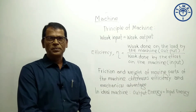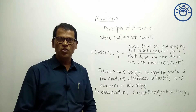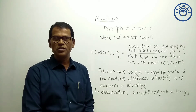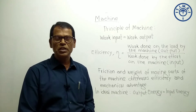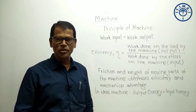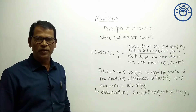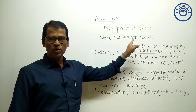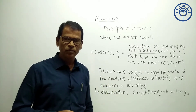Next is the principle of machine. According to the law of conservation of energy, energy can neither be created nor destroyed; one form of energy is converted into another form and the total energy in the universe remains constant. According to this law, no machine can create energy. The energy we apply to the machine is delivered as the same amount of energy in the ideal case. So the principle of machine is: work input equals work output.